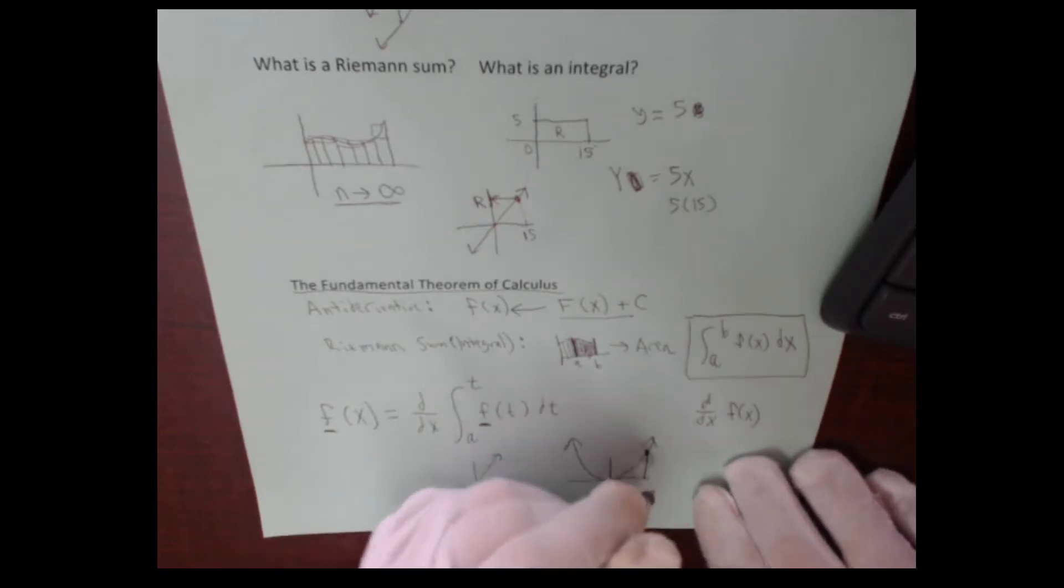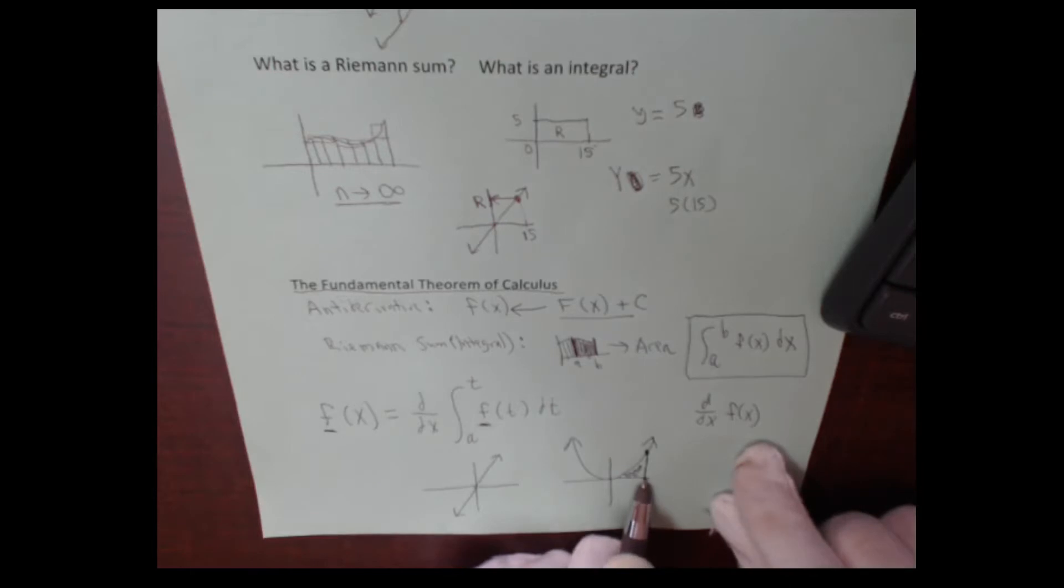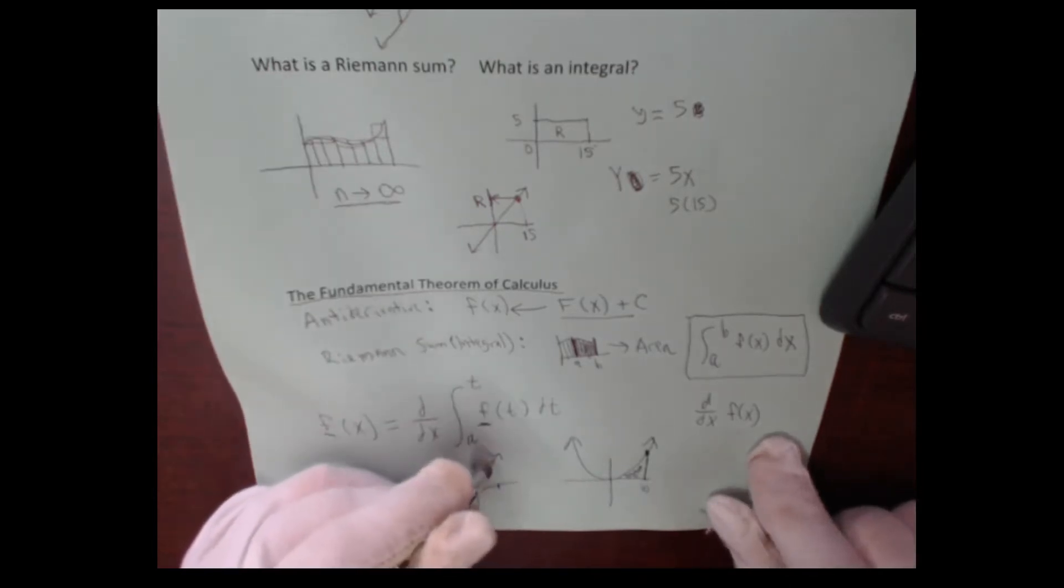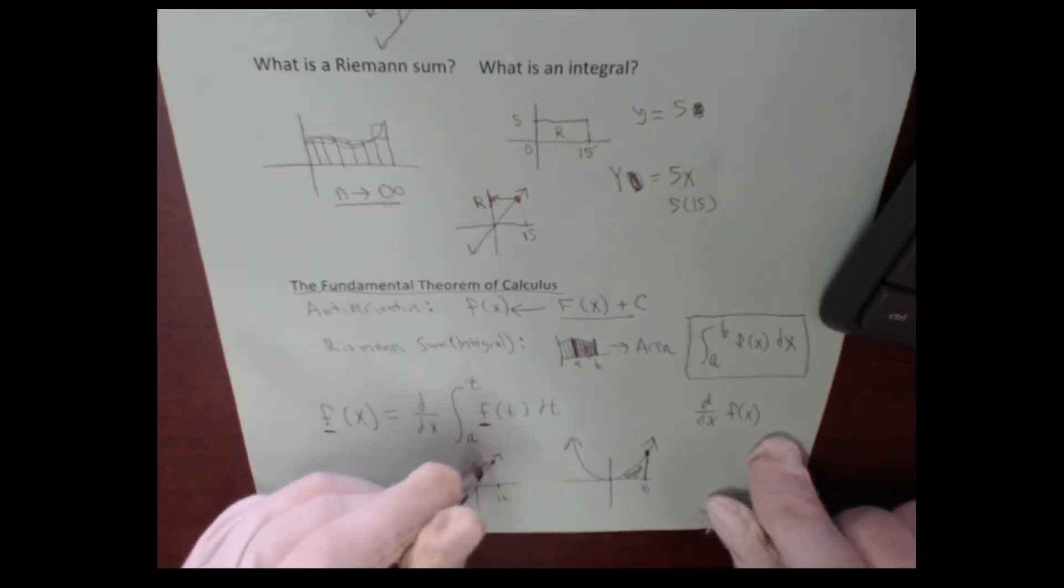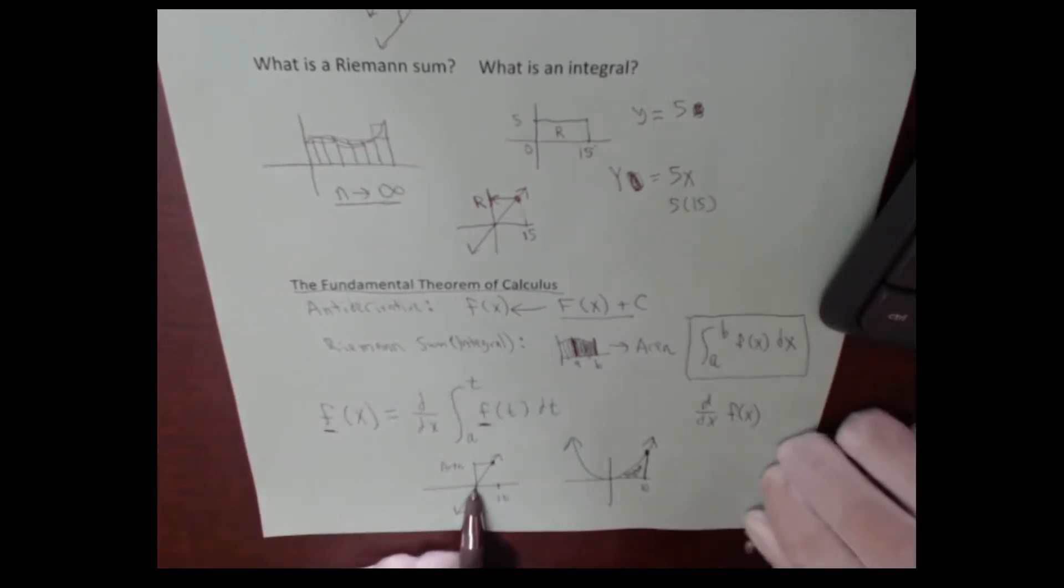If I take this point right here, call it 10, I might be interested in knowing what is the area from here to here. The answer is whatever point is here on the derivative function. So this value right here is this area right here. Whereas this equation is telling you the slope of this one.